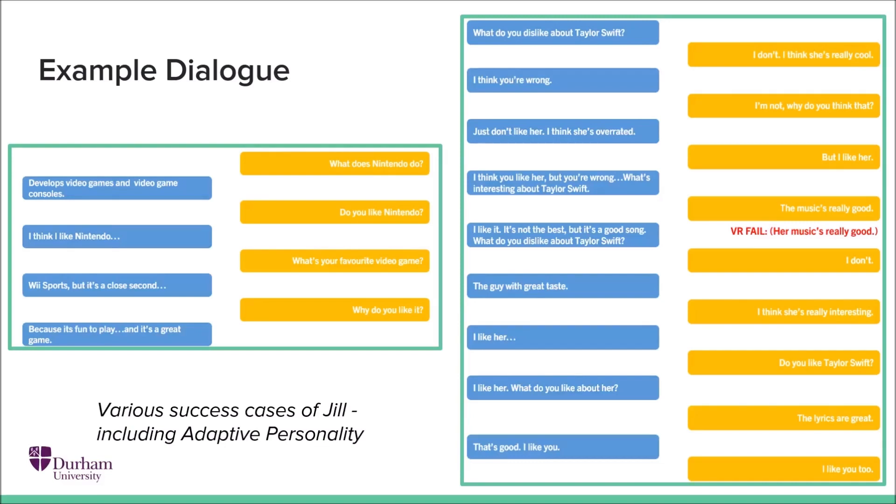so here we can see some further example dialogue generated from Jill. So on the right, here is an example of Jill adapting their personality over the course of the conversation. So to begin with, Jill really doesn't like Taylor Swift, but I persist. And over time, Jill adapts their